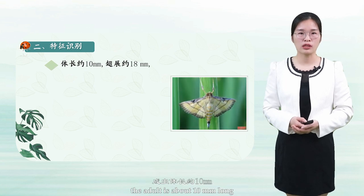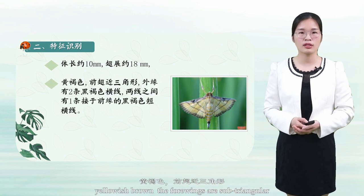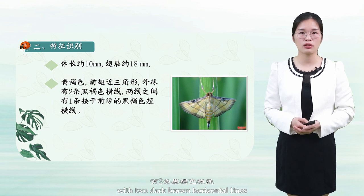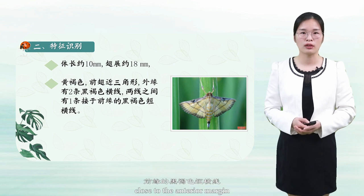Characteristic identification: the adult is about 10 mm long with a wingspan of about 18 mm, yellowish brown. The four wings are sub-triangular with two dark brown horizontal lines and a short dark brown horizontal line close to the anterior margin.